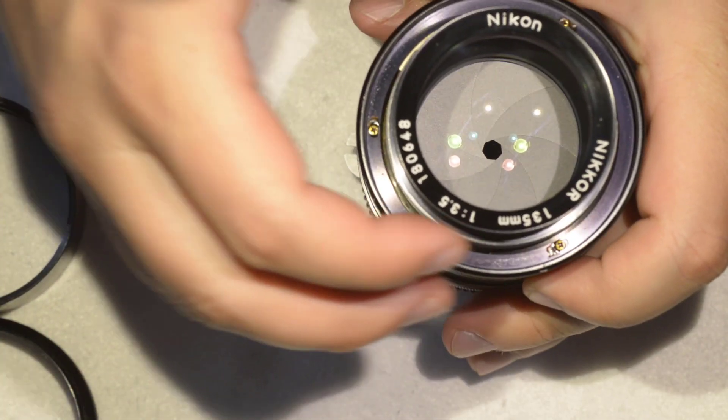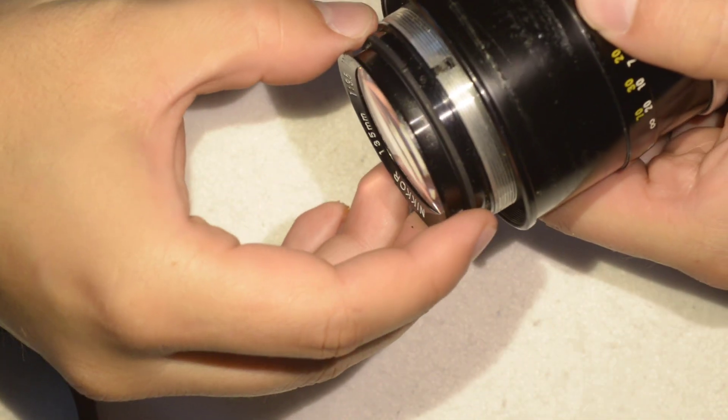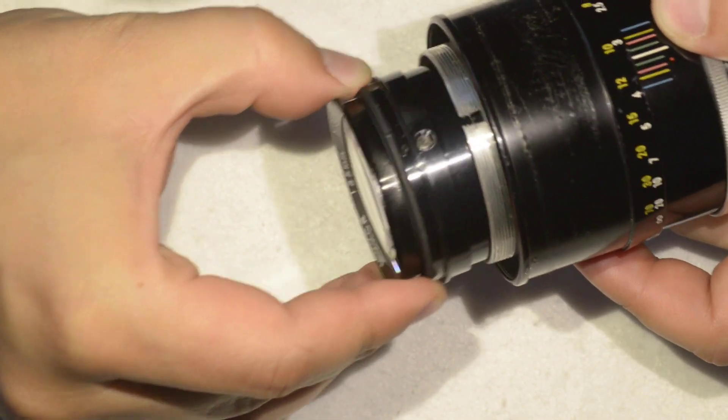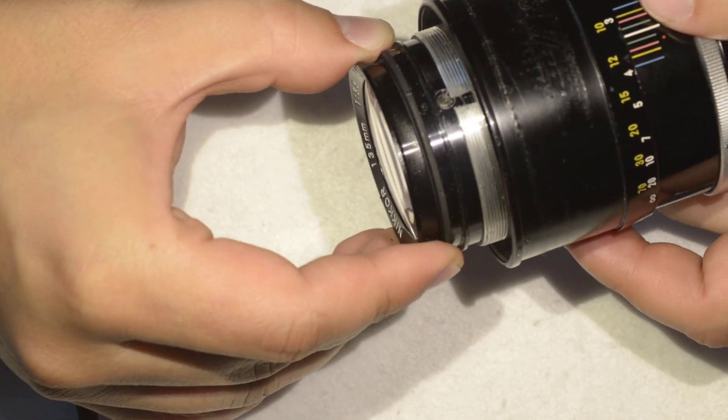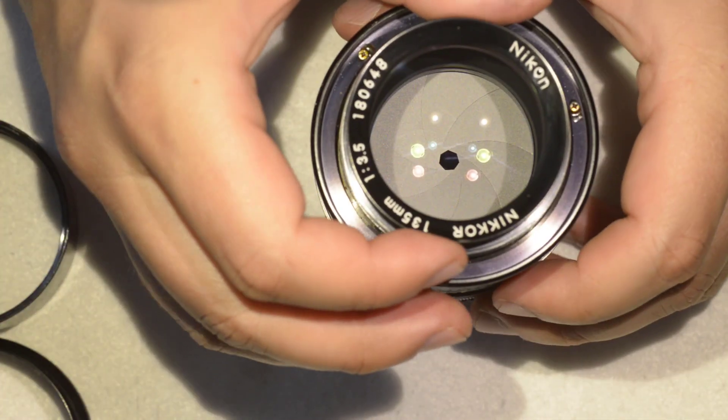Then here is quite straightforward because you can simply just remove the complete optical assembly here just by pulling - everything will come out. For me it's a bit cumbersome to do it now because I just need to remove the front lens, so I'll keep everything in.